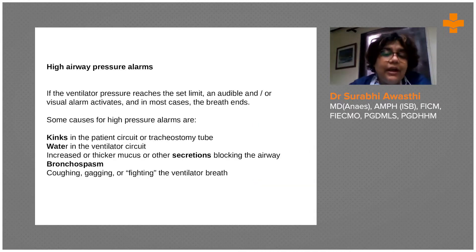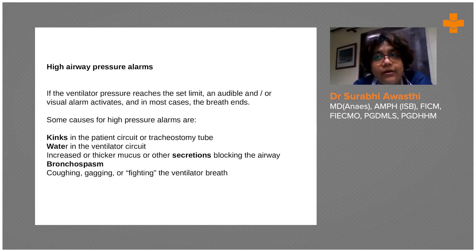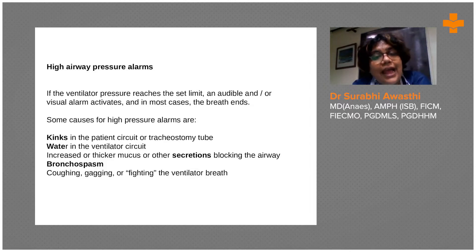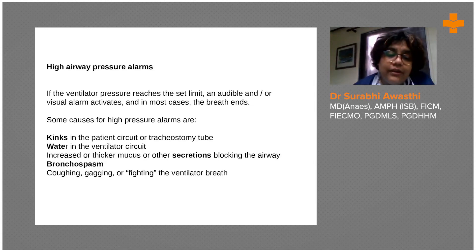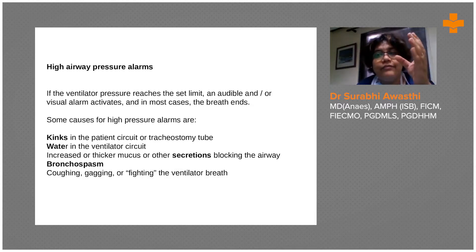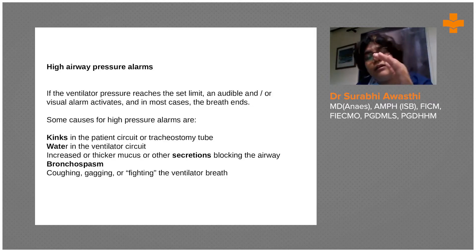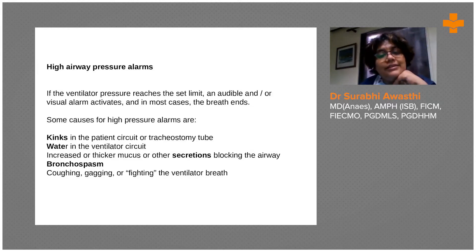When your ventilator gives a high pressure airway alarm, there are two types of pressure: peak inspiratory pressure and peak plateau pressure. Peak inspiratory pressure is usually due to airway resistance and lung compliance together, while plateau pressure is because of lung issues. If only the peak inspiratory pressure is high, the problem is in the airway. If both are high, both the lung and the airway are involved.